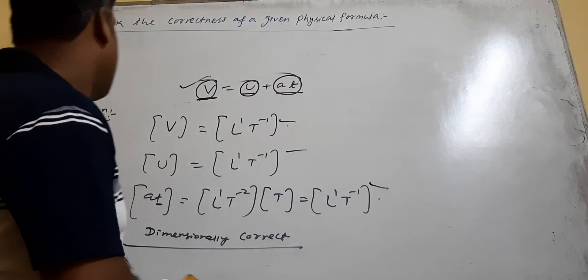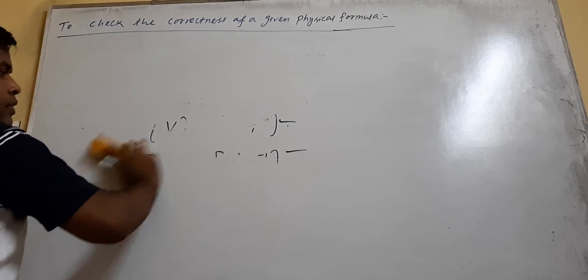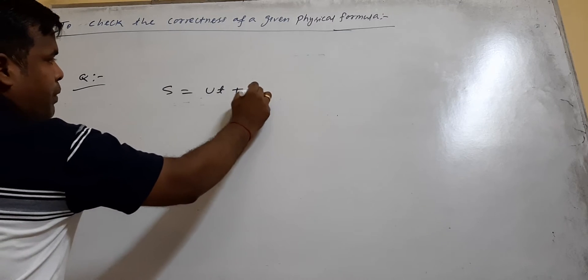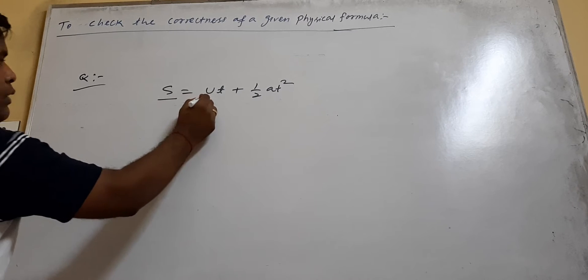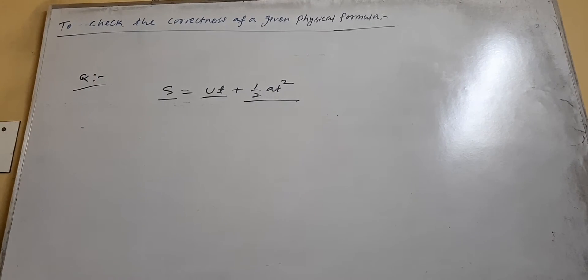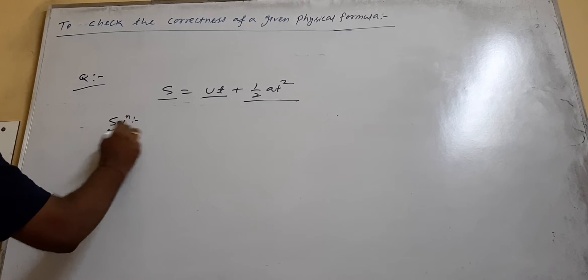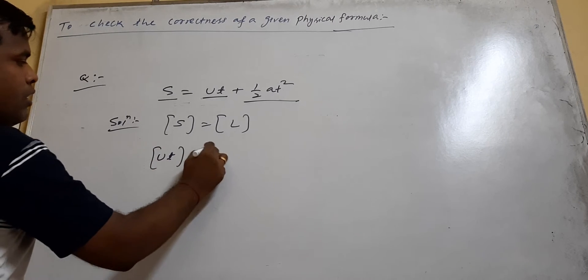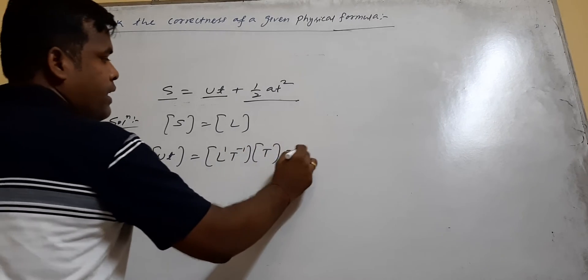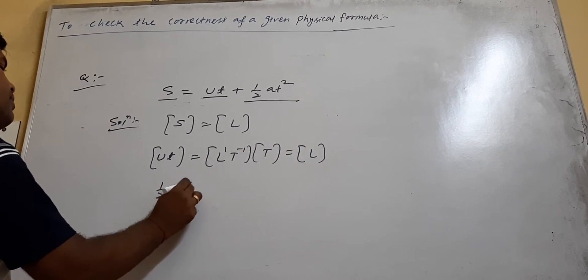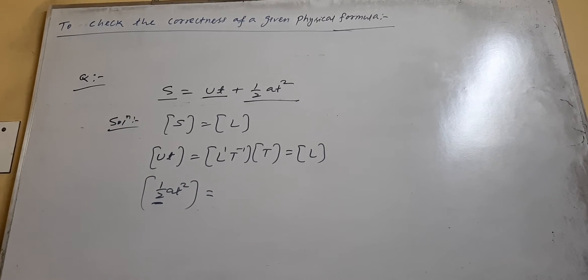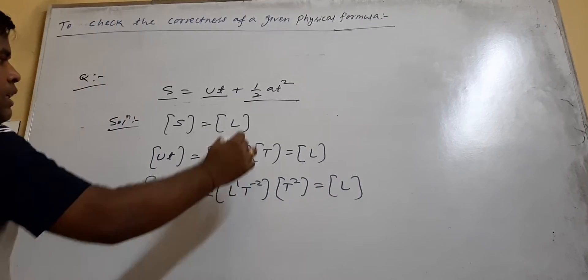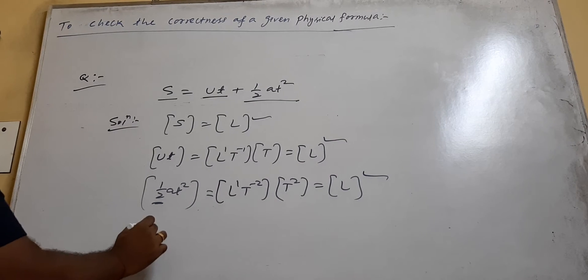Take another example: s equals ut plus half at squared. Here, s is one term, ut is another term, and half at squared is another term. Dimension of s — displacement — is L¹. Dimension of ut: u is initial velocity L¹T⁻¹, multiplied by time T, gives L¹. And half at squared: half has no dimension, acceleration is L¹T⁻², multiplied by T², gives L¹. You see, all three terms have the same dimension, so it is dimensionally correct.